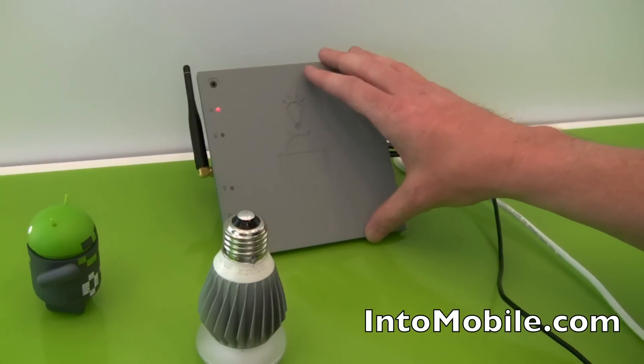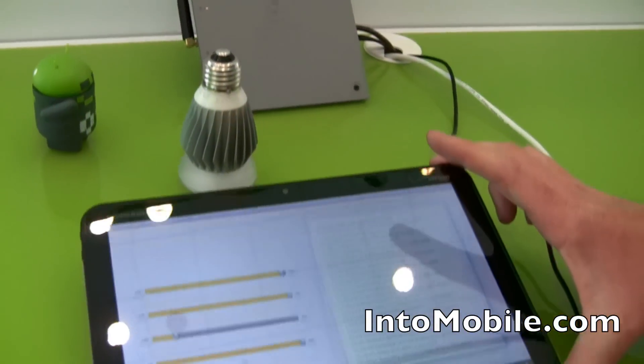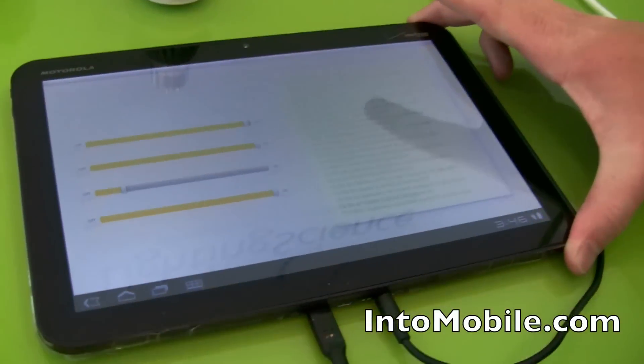Once you have that IP connectivity, it's pretty simple to bridge over to any Android device that's operating on that same network.